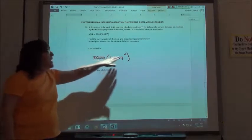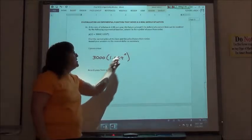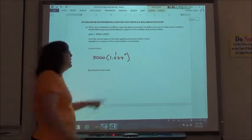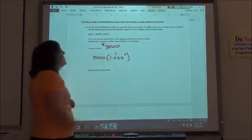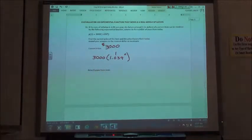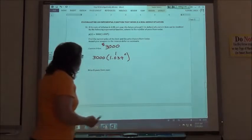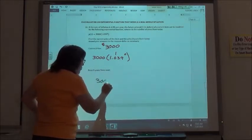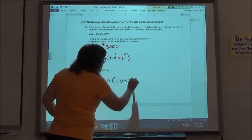So what is the current price? Well, I could tell from looking at this that the current price is going to be $3,000, but if we were going to calculate that, we would say $3,000 times 1.039 to the zero power. Current price means I haven't spent any time yet. So anything to the zero power is equal to 1, 1 times 3,000.